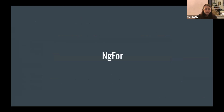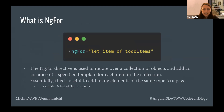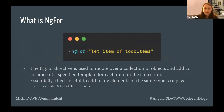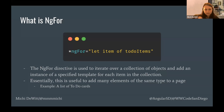The next structural directive we're going to talk about today is ngFor. The ngFor directive is used to iterate over a collection of objects and add an instance of a specified template for each item in the collection. Really all that means is: I have an array of items and I want to add the same element for each item in the array. Something like a to-do list is a really great use case for this.